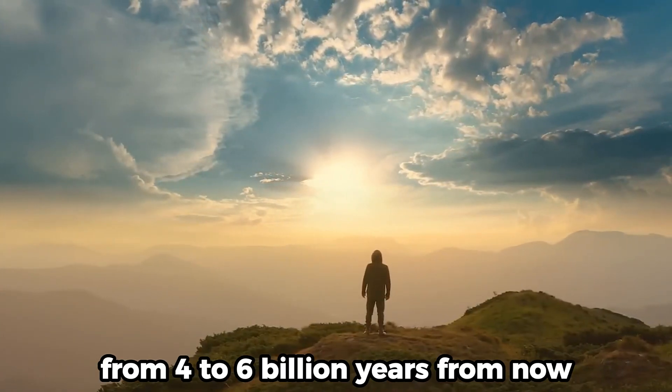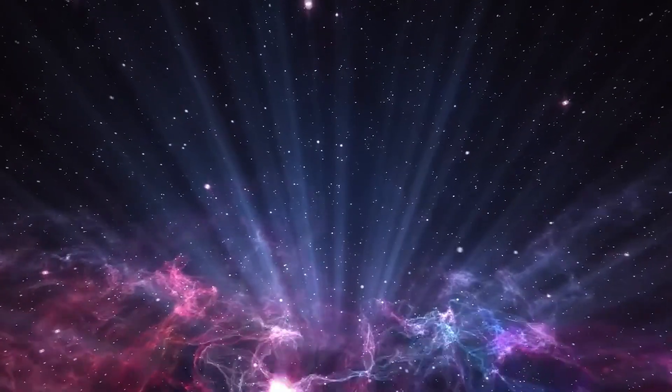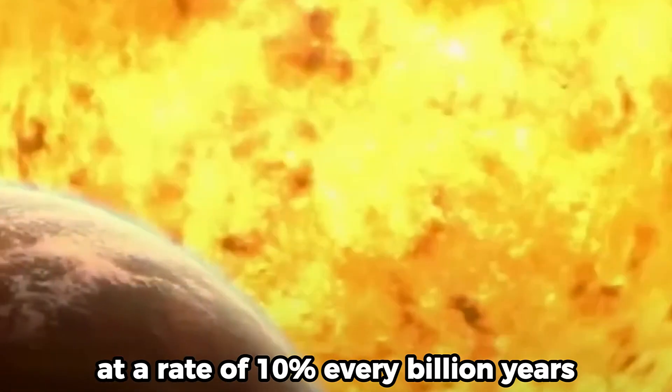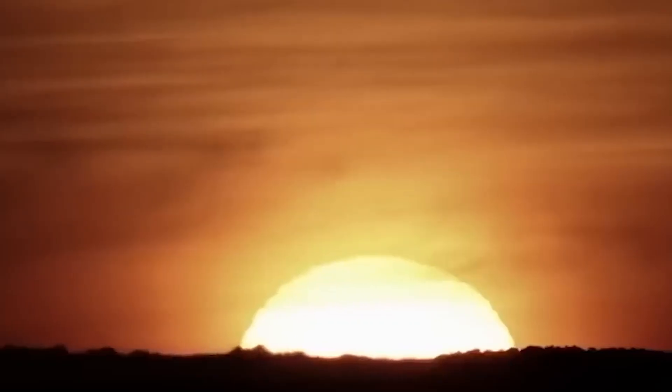This terrible event might take place anywhere from 4 to 6 billion years from now. Yet, the planet may become uninhabitable much sooner than that, as the light of the Sun continues to increase at a rate of 10 percent every billion years. The habitable zone will eventually extend beyond the boundaries of Earth.